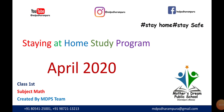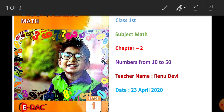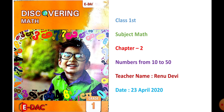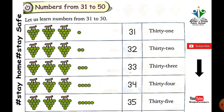Good morning students. Welcome to the staying at home study program. This is a mathematics lecture for first class. We will discuss chapter 2, numbers from 31 to 50. In the last video, we discussed numbers up to 30. Now we will discuss numbers 31 to 50.